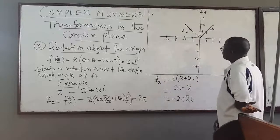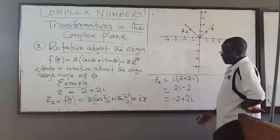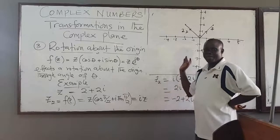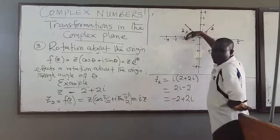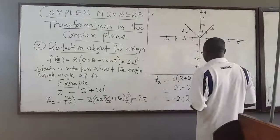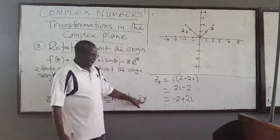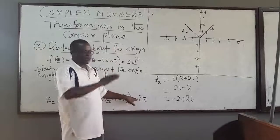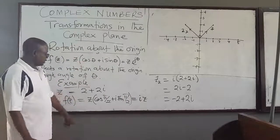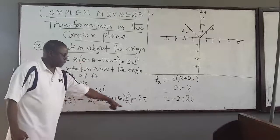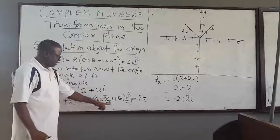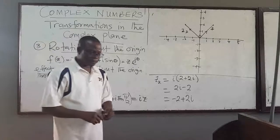In this case it is π/2. More generally, whenever you multiply i by a complex number, you are rotating it through 90 degrees counterclockwise. If you multiply by negative i, you rotate it clockwise through 90 degrees. You can do the same with π/3 and you'll see the rotation corresponds to that angle.